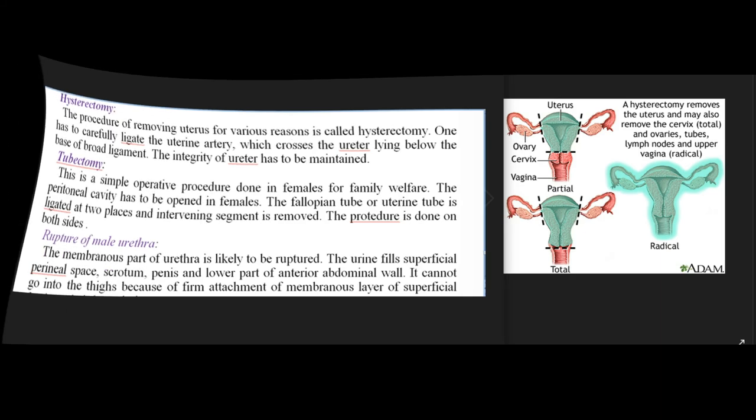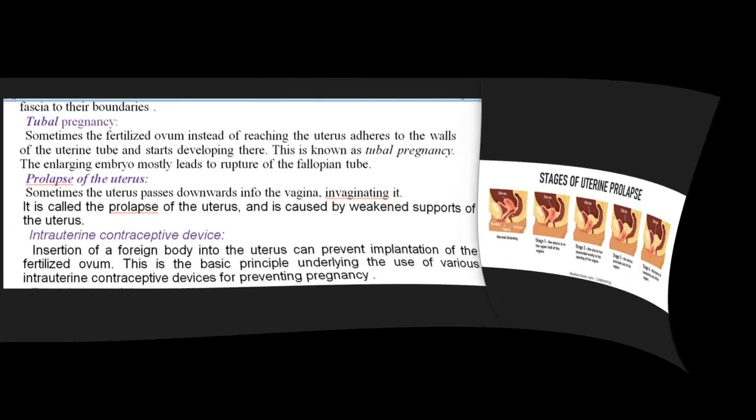Rupture of male urethra: the membranous part of the urethra is likely to be ruptured. Urine fills the superficial perineal space, scrotum, penis, and lower part of the anterior abdominal wall. It cannot go into the thighs because of the firm attachment of the membranous layer of superficial fascia to their boundaries.